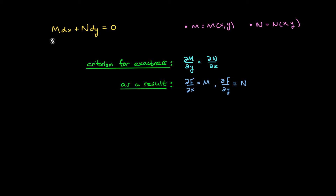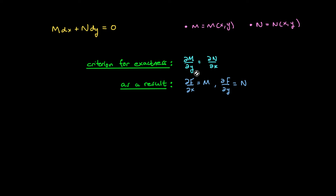We've spoken before about how to determine whether a first-order differential equation of the form M dx plus N dy equals 0 is exact, where M here is a function of x and y, and N is likewise another function of x and y. The method we used to determine exactness was a simple criterion: the partial of M with respect to y must be equal to the partial of N with respect to x.